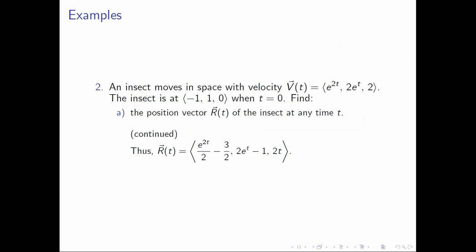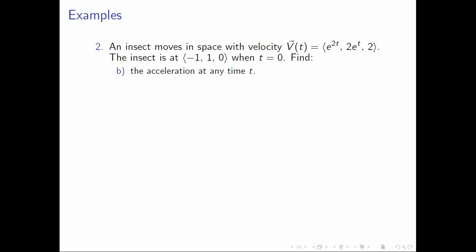Therefore our position function is r(t) = (e^(2t)/2 − 3/2, 2e^t − 1, 2t). For letter B, we want the acceleration at any time t. Recall that a(t) = v′(t), so we differentiate v(t) component-wise. The first component gives 2e^(2t), the second gives 2e^t, and the third gives 0. So the acceleration is a(t) = (2e^(2t), 2e^t, 0).